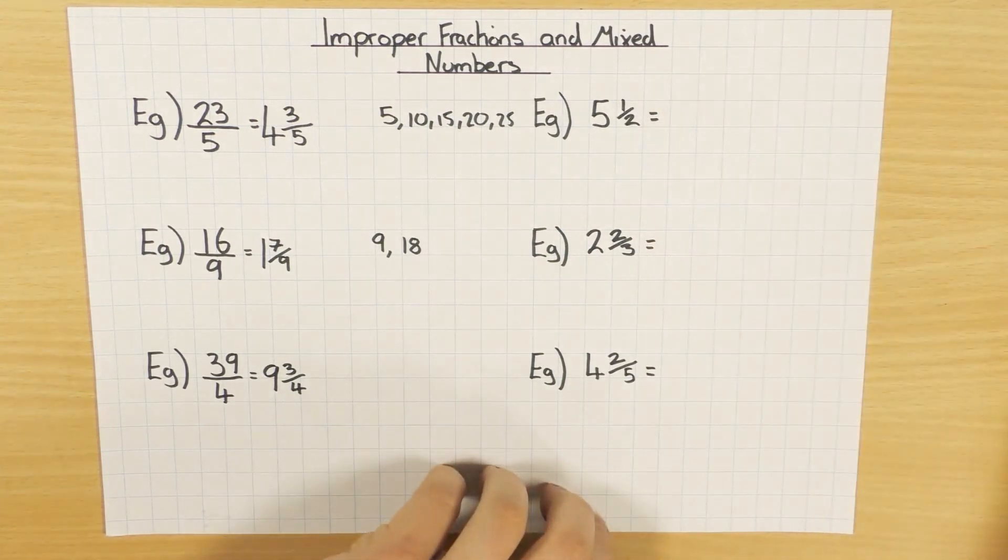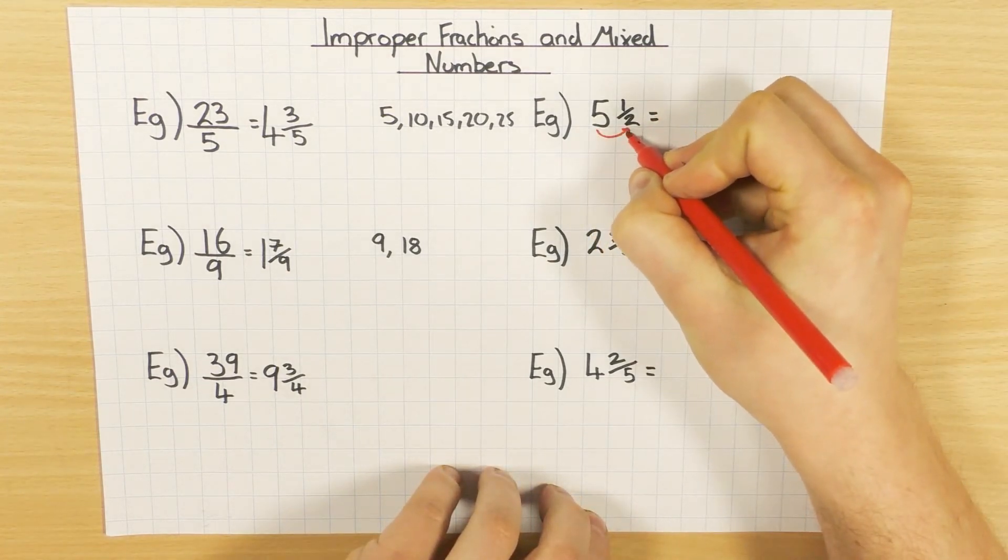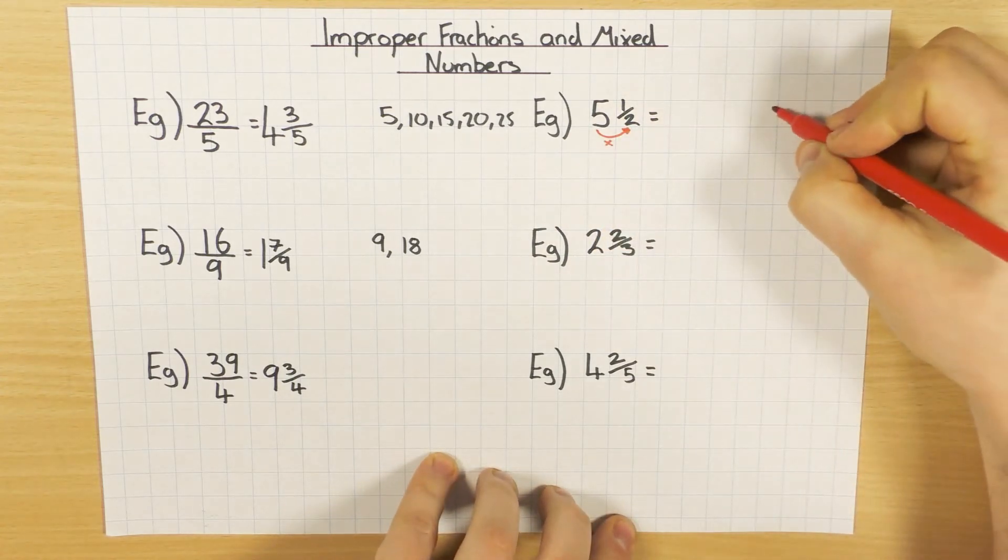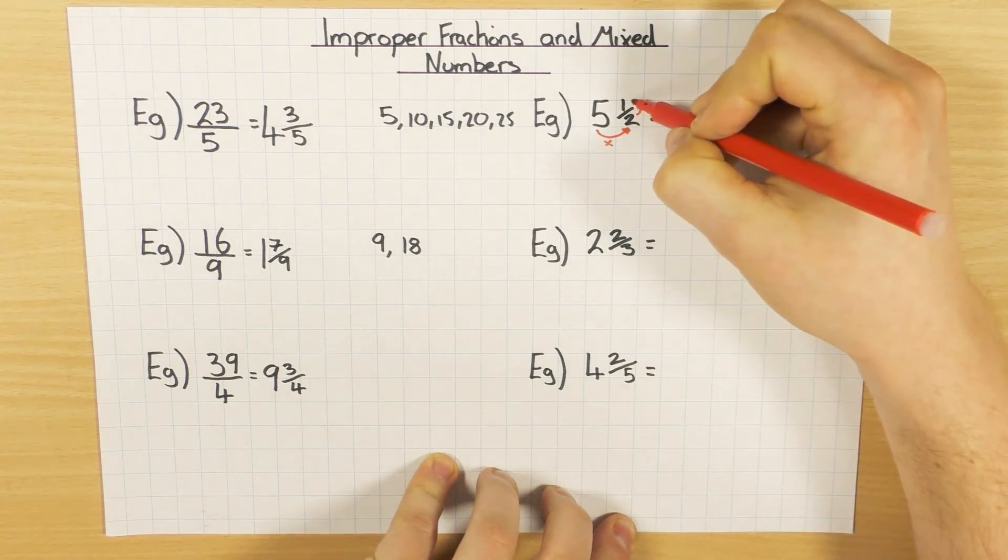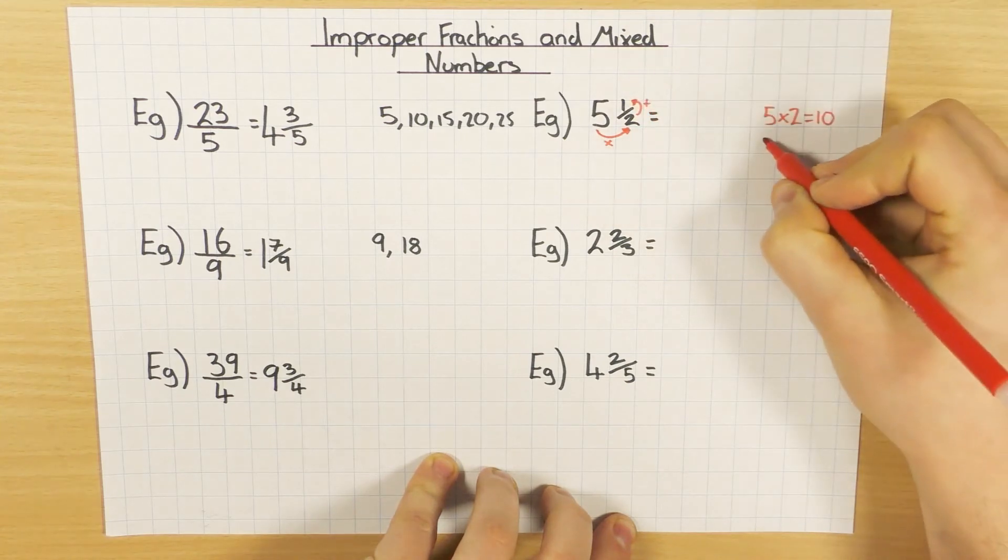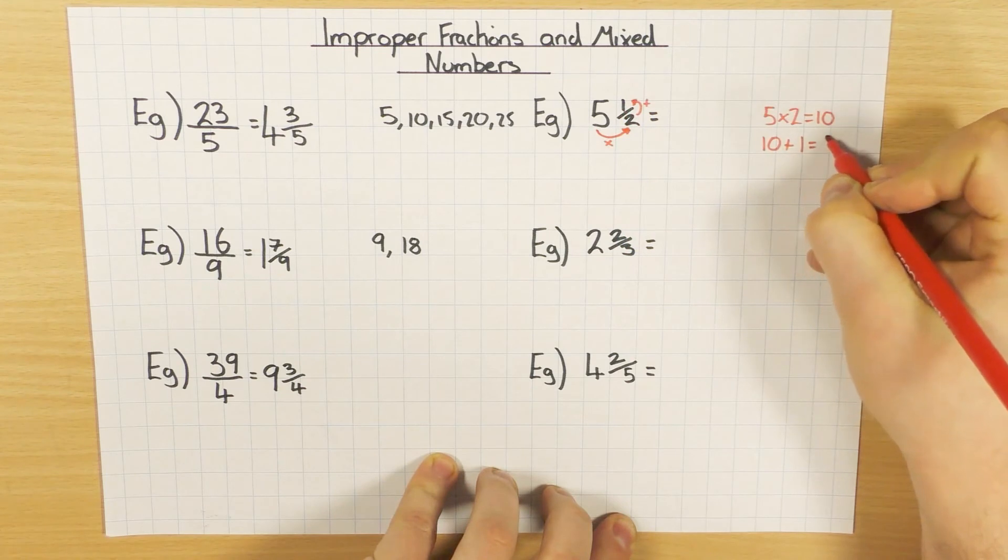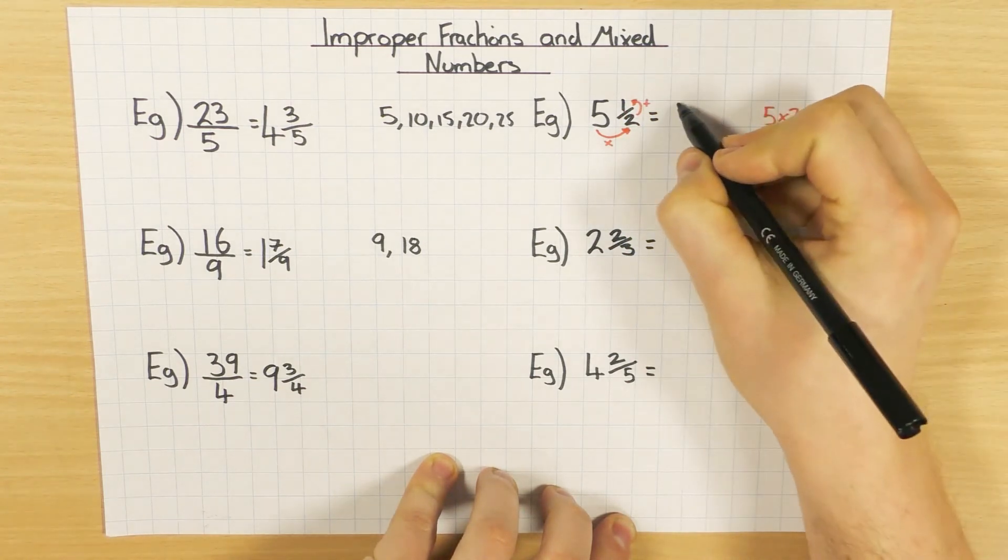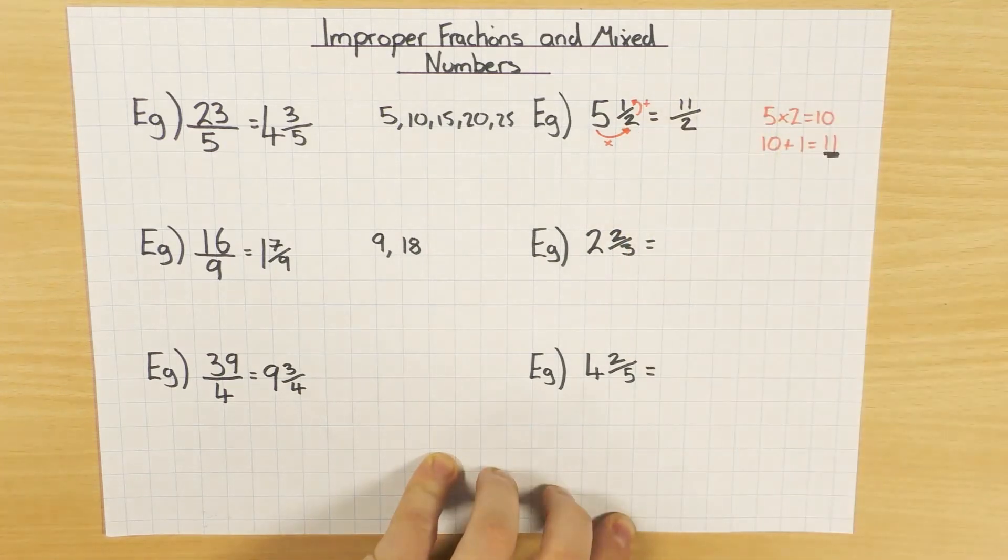Now to do that, all you do is take this whole number here and you times it by the denominator. So I'm doing 5 times 2, which is 10. And once you've done that, you then add the top number. So my 10 plus 1 in this case equals 11. So the 11 here is your top number, your numerator, and as before, your denominator stays the same.